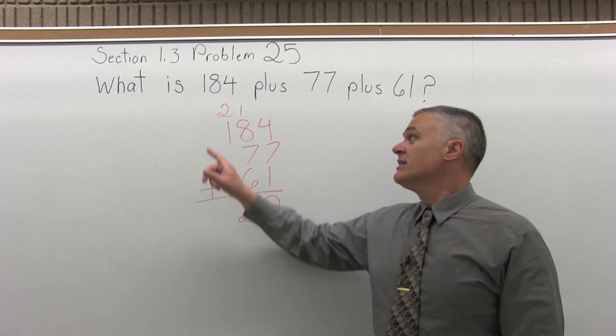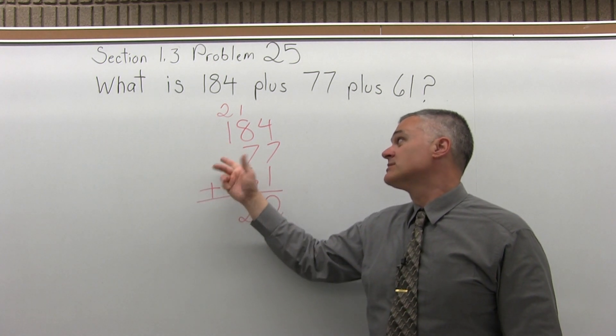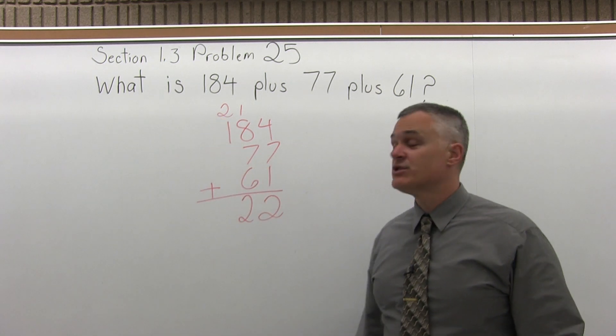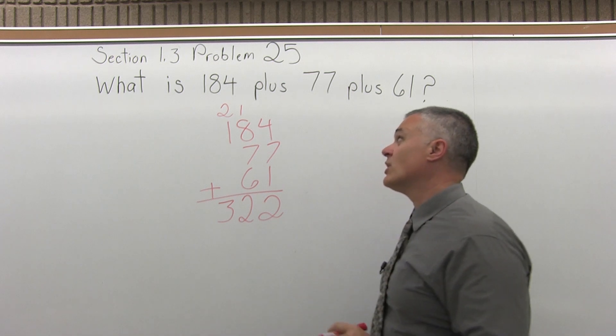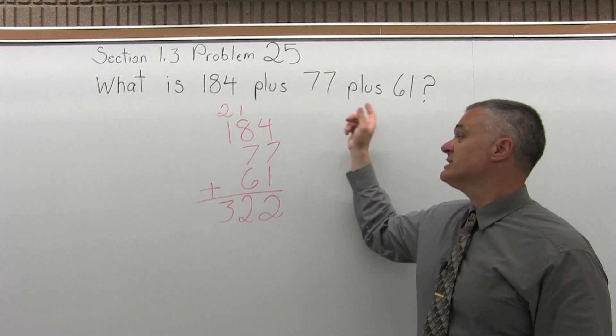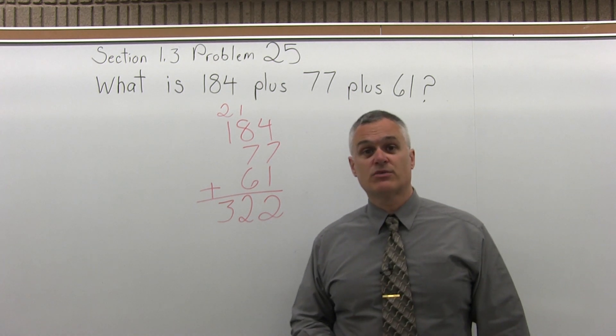And then I will add 2 plus 1 plus nothing really. So 2 plus 1 is 3. And that gives me a result of 322. So 184 plus 77 plus 61 is 322.